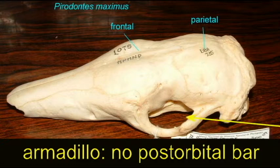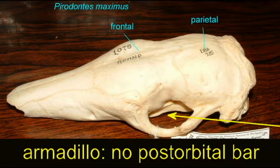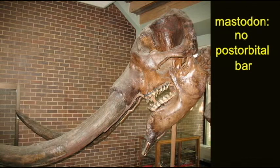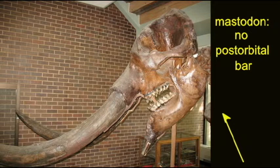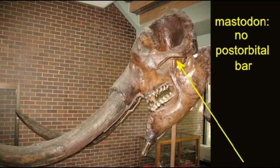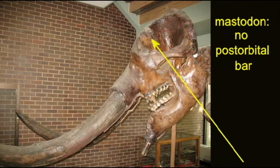Here you can see two skulls, that of an elephant and that of an armadillo, which lack the post-orbital bar. They retain the primitive condition of having the area for jaw muscles being continuous with the area for the orbit. So in these mammals, as in the first mammals, there is no post-orbital bar.